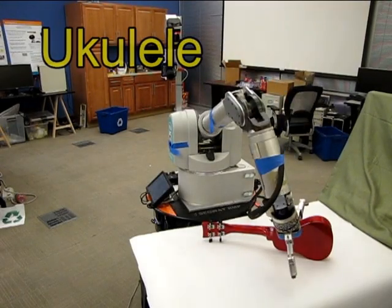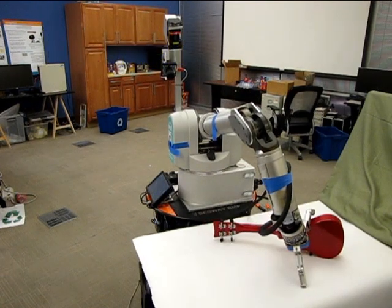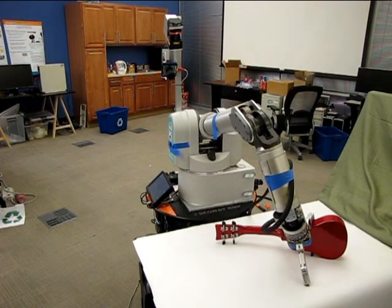We are also not limited to objects that are smaller than the hand. In this example, we are grasping a ukulele which is substantially larger than the robotic hand.